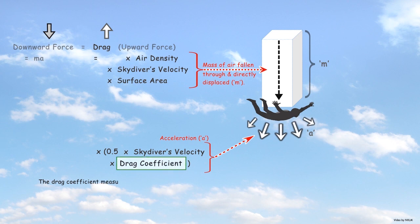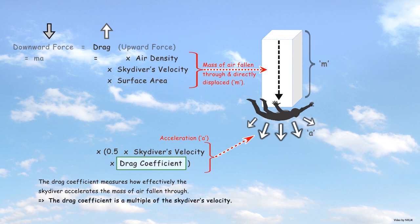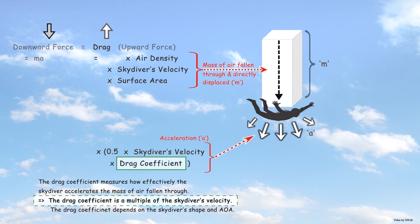The drag coefficient measures how effectively the skydiver accelerates the mass of air directly fallen through to then indirectly displace more air. Critically, the drag created depends on the drag coefficient multiplied by the skydiver's velocity. The drag coefficient depends on things like the skydiver's shape and the angle of attack to the direction of travel. This is a new explanation and is extremely significant.